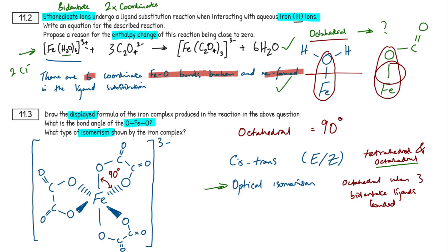Let's read through the examiner's report to see where students went wrong. For question 11.2, many failed to give a balanced equation — charges across reactants and products must balance. Charges on the complex were often incorrect, and many did not give water as one of the products: if substitution occurs, the displaced ligand must appear on the product side. Additionally, many students understood that the same number of bonds were broken and formed, but few could also state that they were the same type of bond.